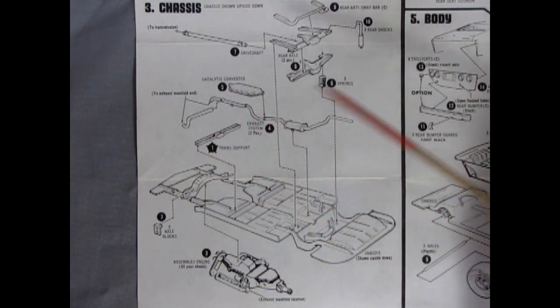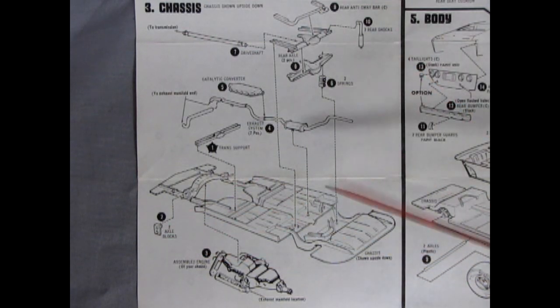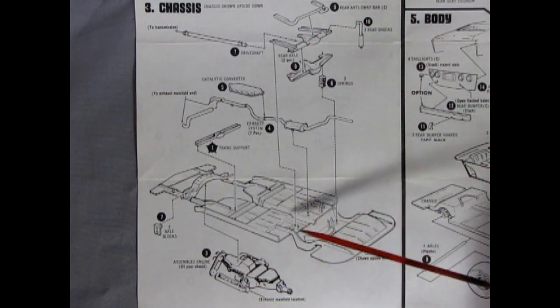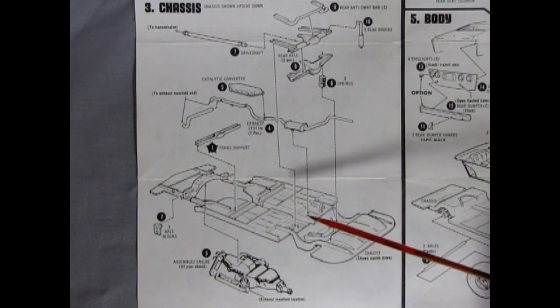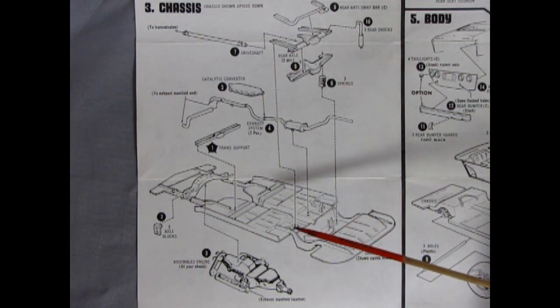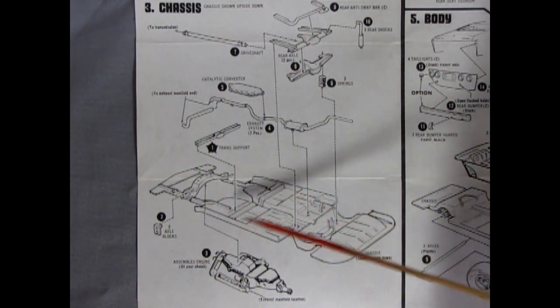Then you've got your transmission support and axle blocks as well as your assembled engine. This chassis pan is very much the same one as in our 1975 Bobby Allison race car.